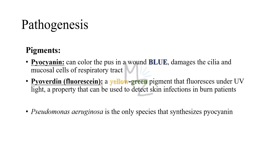Pathogenesis is based on pigments and multiple virulence factors. Pseudomonas aeruginosa produces two pigments useful in clinical and lab diagnosis. First, pyocyanin, which can color pus in a wound blue and damages the cilia and mucosal cells of the respiratory tract. Second, pyoverdin fluorescein — a yellow-green pigment that fluoresces under ultraviolet light, useful for early detection of skin infection in burn patients. In the lab, these pigments diffuse into agar, imparting a blue-green color useful in identification.